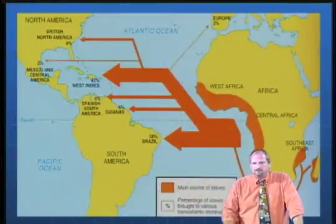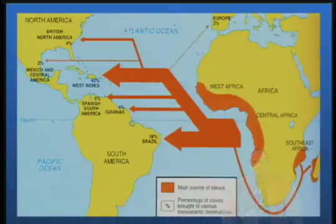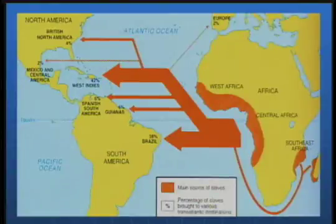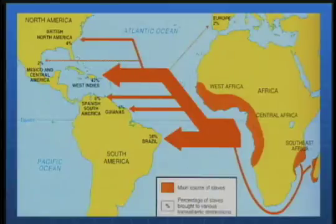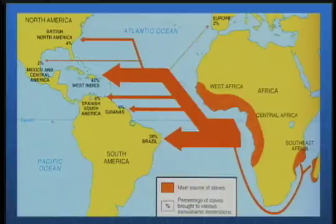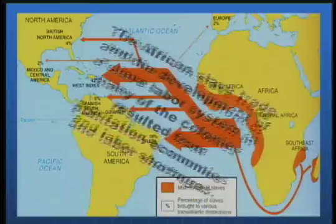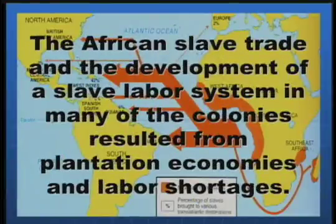Here's a map that shows the African slave trade. Notice where the slaves are coming from, notice where they are going, and notice the size of the arrows. The vast numbers of Africans brought by forcible importation to Brazil, the Spanish Americas, the West Indies, and British North America are absolutely staggering. The African slave trade and the development of the slave labor system in many colonies resulted from plantation economies and labor shortages.